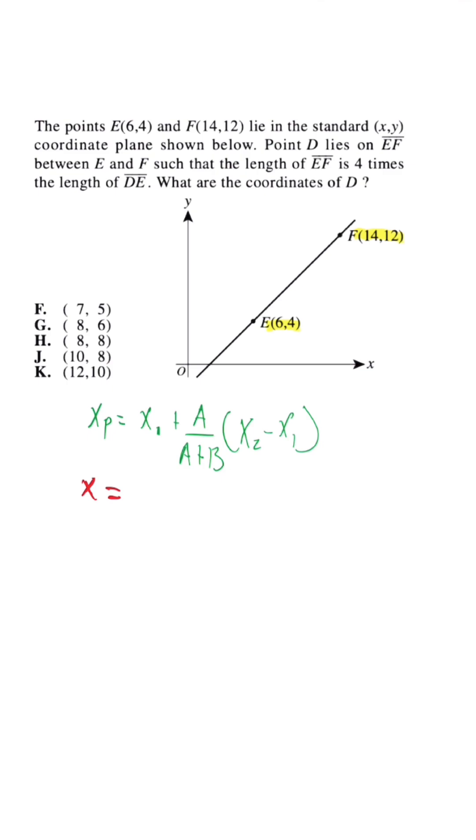So the new X coordinate is going to be equal to the first one, so we're talking about E, plus—and remember that if it's four times the length, that means we have to use the fraction 1 over 4 to plug in because we're trying to divide it into four parts—and we know we're going to subtract 6 from 14, that's the X2 minus X1.